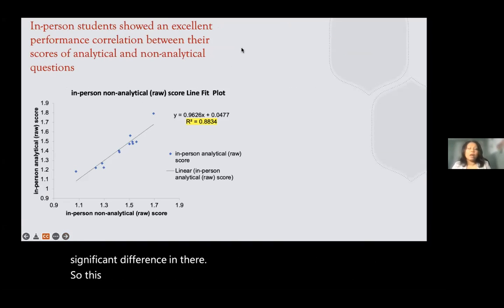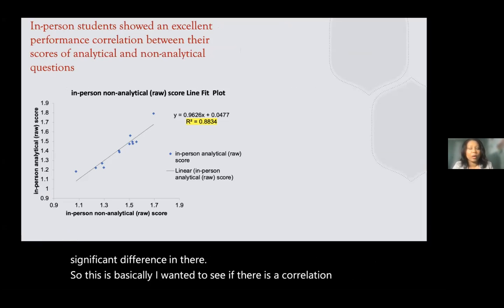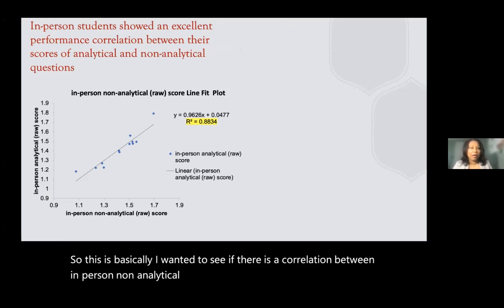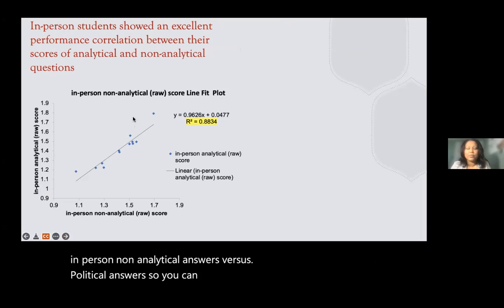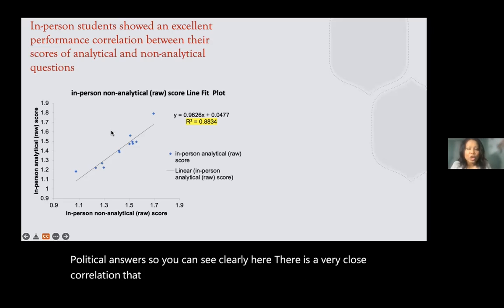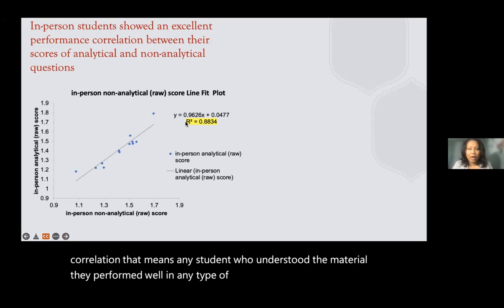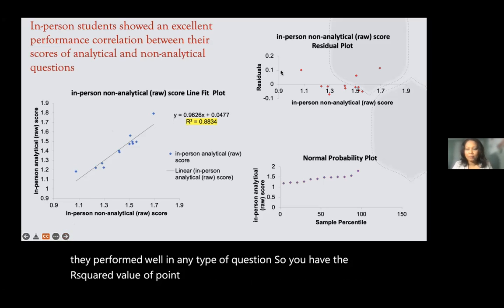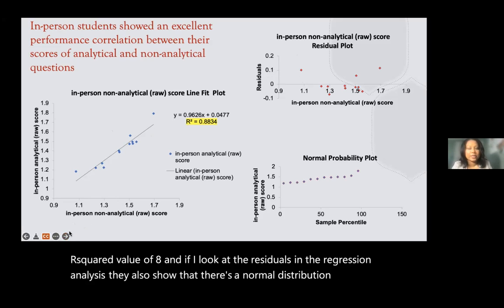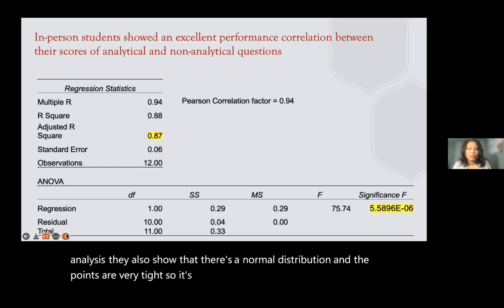Looking at correlations, in-person students showed a very strong relationship between non-analytical and analytical answer scores. Students who understood the material performed well on any type of question, with an R-squared value of 0.8 and a Pearson correlation coefficient of 0.94. Residuals in the regression analysis showed a normal distribution with tightly clustered points.